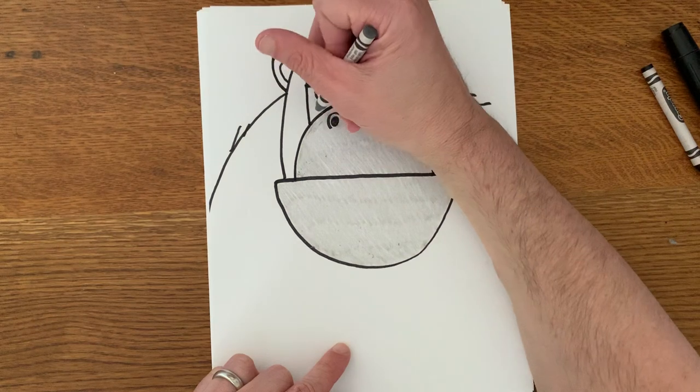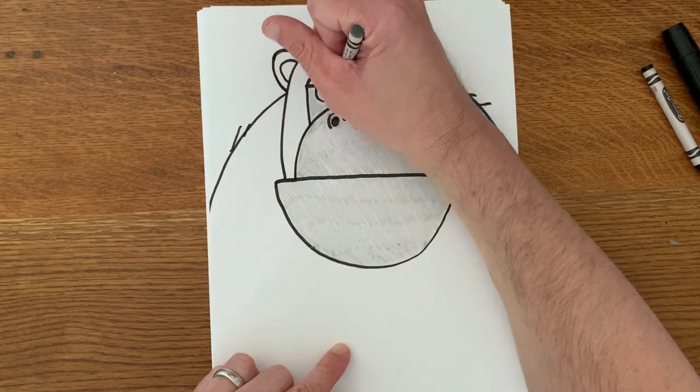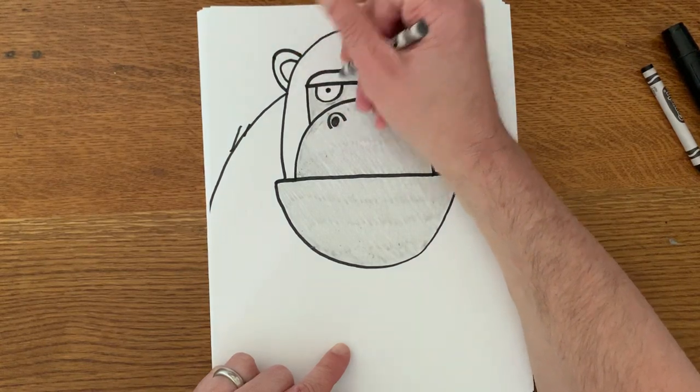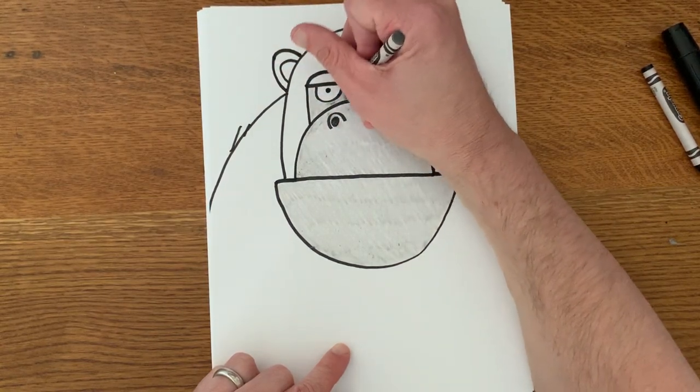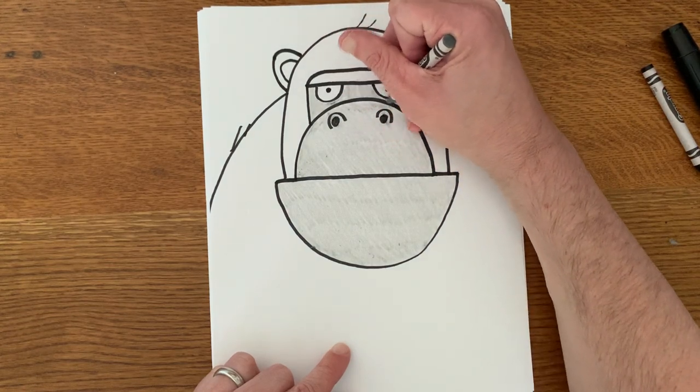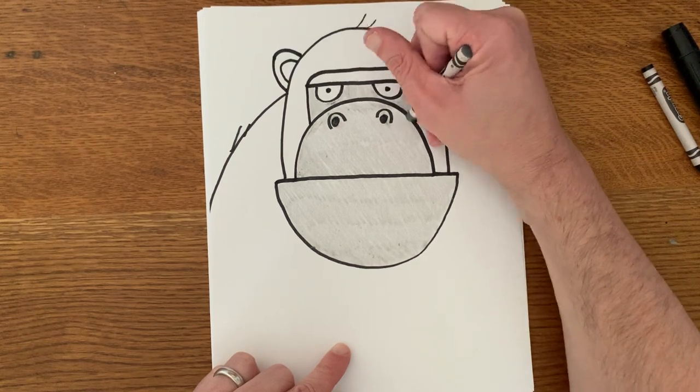Now I'm going to do the part that leads to his eyes. Also gray, but I'm being careful not to color his eyes in gray. I want them to stand out as white. So I'm going to leave those uncolored and get all this space in between.